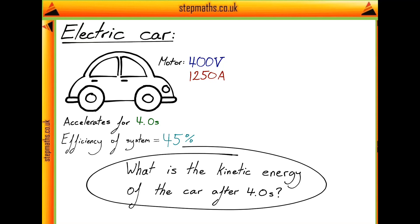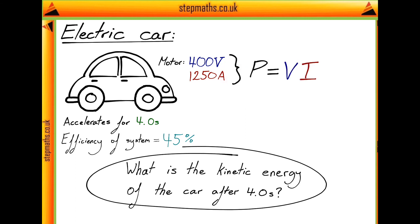This question might initially seem quite tricky, since the answer we're asked for is a kinetic energy, yet none of the information we're given seems to directly relate to an energy. To help us solve this, let's think about which equations we could use. The motor has a voltage across it of 400 volts and a current through it of 1250 amps. Whenever you see these two together, this should spring to mind the formula that the power of an appliance equals the voltage across it multiplied by the current through it.